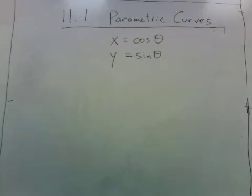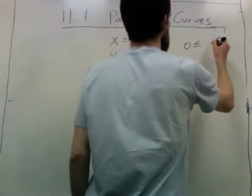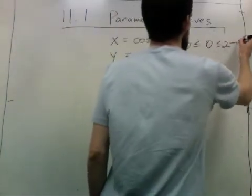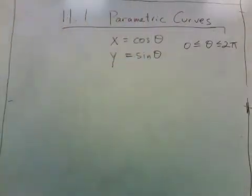So if you look at, let's say theta goes from 0 to 2π, and we're saying each x value is cosine theta and each y value is sine theta, well, those are just points on the unit circle.